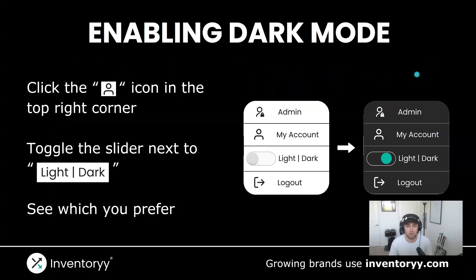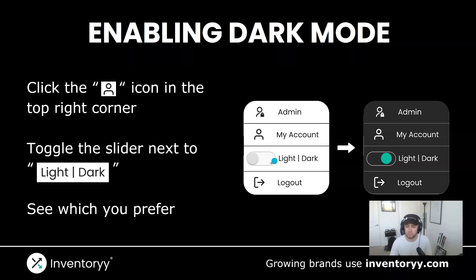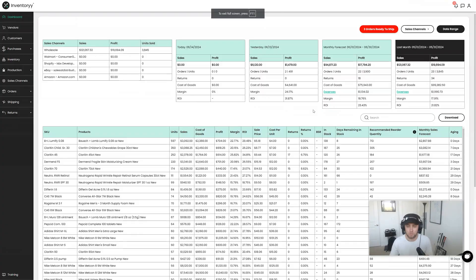Here's how we enable Dark Mode. I'm going to walk you through how to do this step by step, but I'll just give you a quick overview. You're going to click the person icon in the top right corner, and then you can toggle that little slider between Light Mode and Dark Mode. This is the menu you're going to see — just click this slider, and that is how you enable Dark Mode.